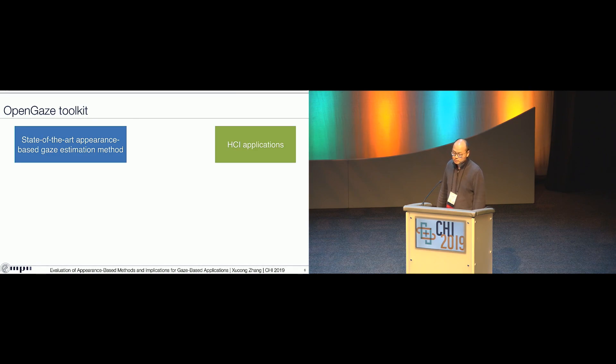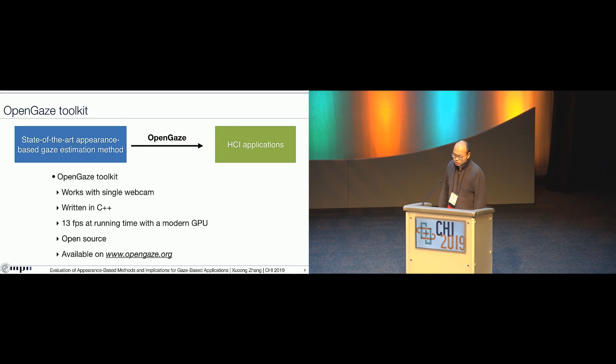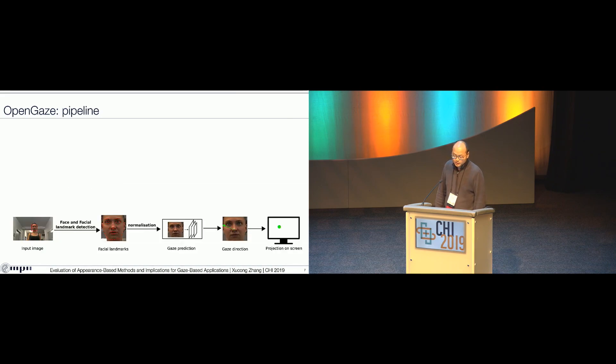So in this paper, we propose a software toolkit called OpenGaze to bridge these two domains. Our software toolkit is an implementation of current state-of-the-art appearance-based methods and it can work with a single webcam. It's written in C++. It can run 13 FPS with a modern GPU. It's open source and also available on our website now. And next, I'm going to break down the pipeline of our OpenGaze software.